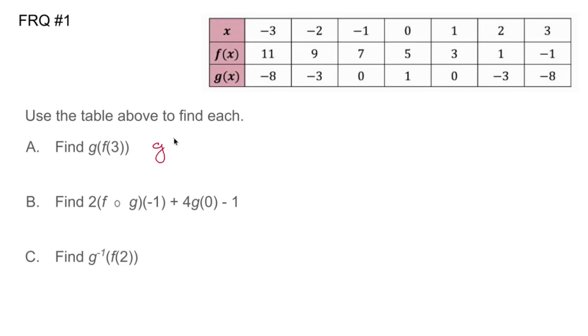g of f of three is going to ask us to find g of whatever f of three is. So to find out what f of three is, go to your table and find out where x is three, and then find the number on the f of x line. You'll find out that when x is three, f of x is negative one.